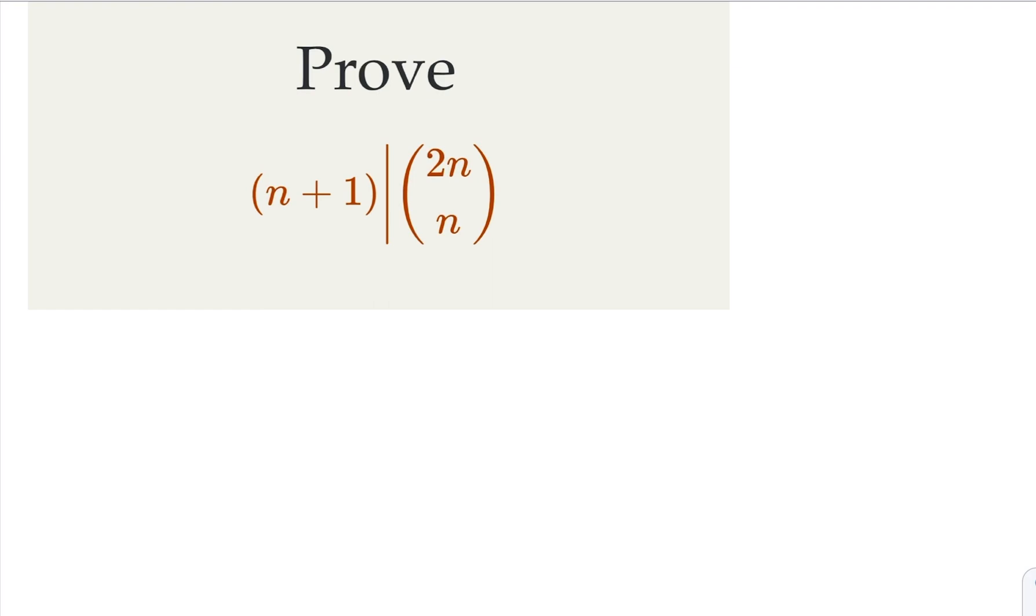Now the way we do it, we can consider the difference of two binomial coefficients. That's going to be 2n choose n. Now because the center is bigger than the other one, the neighbor, which is 2n choose n plus 1.